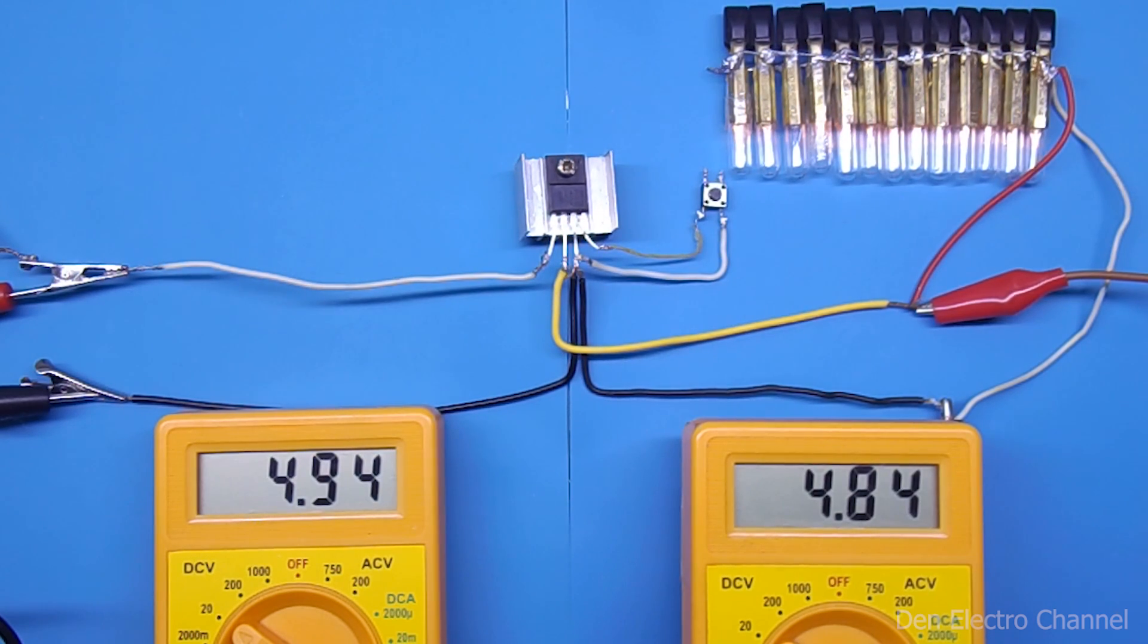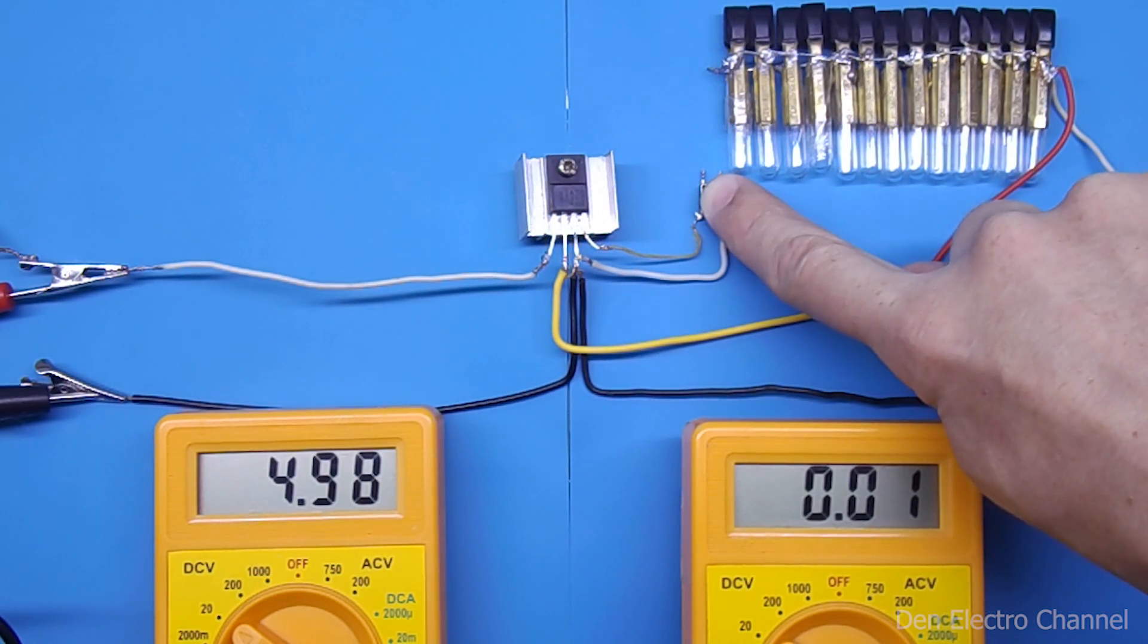If the voltage drops even less, for example to 5 volts, then the load can also be turned off using a button.